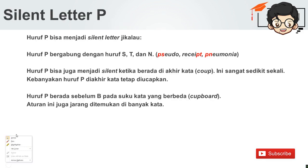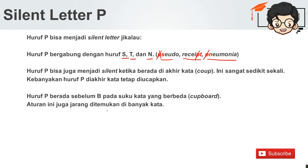Kita tidak perlu mengucapkan huruf P dalam kata bahasa Inggris dengan mengikuti beberapa aturan berikut. Yang pertama, huruf P bergabung dengan huruf S, T, dan N. Contohnya: pseudo, receipt, pneumonia. Perhatikan: huruf P bergabung dengan huruf S, jadi P-nya tidak usah kita baca — pseudo. Kemudian huruf P bergabung dengan T di akhir kata — receipt. Lalu kemudian huruf P bergabung dengan N, kita hilangkan juga — pneumonia.